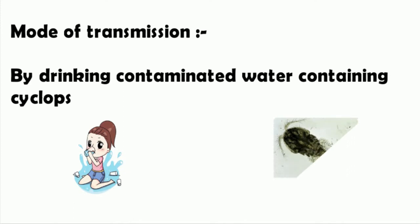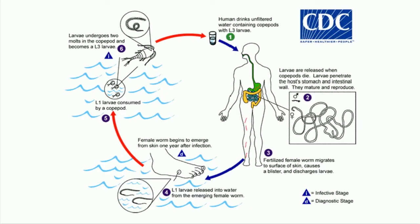This is how the cyclops or copepods look like under a microscope. This picture, taken from the CDC, shows the life cycle of Dracunculus medinensis. In the first step, humans get the infection by drinking water that is not filtered and is contaminated with copepods or cyclops. The infective form is the L3 larva. The cyclops which contain the L3 larva of the Dracunculus worm, if consumed by humans, will cause infection. That is why the L3 larva or the filariform larva is called the infective form of the worm.